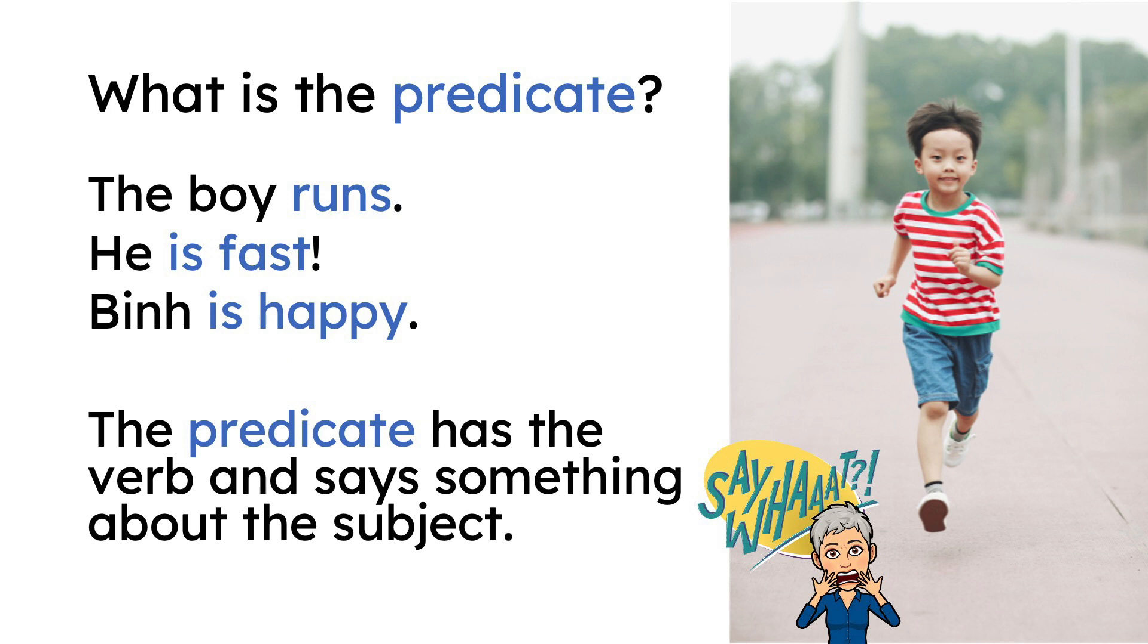The predicate has the verb and says something about the subject. So these three sentences are about this person, and the predicates tell us what he's doing, how he's doing it, and how he feels.